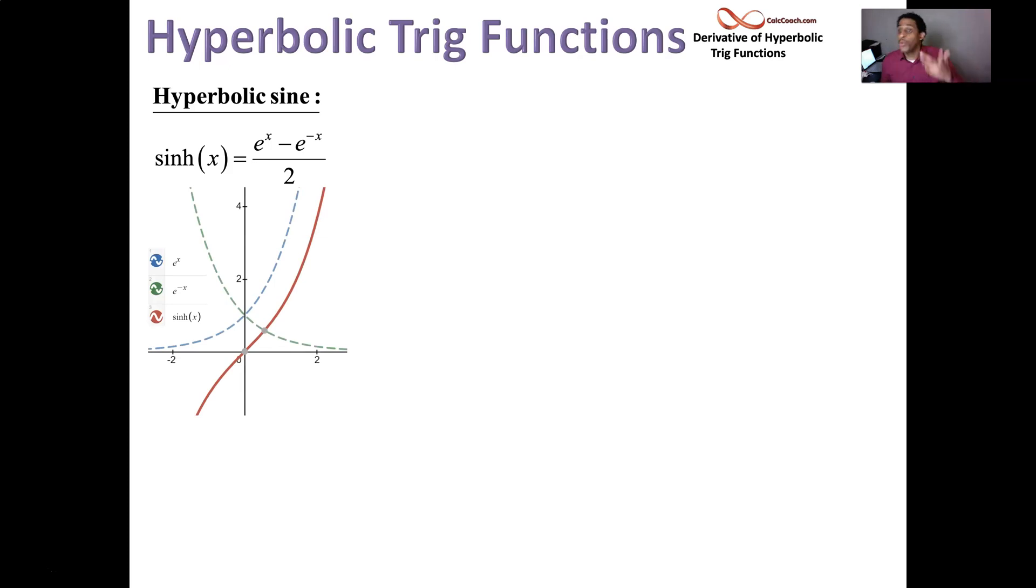So in blue we have e to the x. In green we have e to the minus x. If I take the blue minus the green and divide by 2, I end up with the red function.